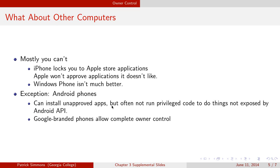However, applications you install can't run code to do things that aren't exposed by the Android API — they have to run inside the Android sandbox. They can't do things that Android, the operating system, will not let them do. You can't replace Android or modify it to do things it wasn't designed to do. So you still don't have complete control over your Android phone.